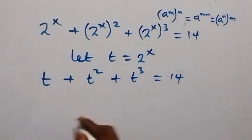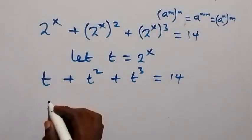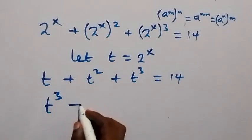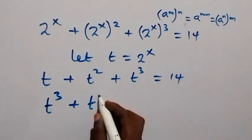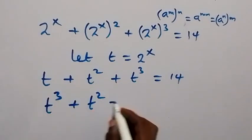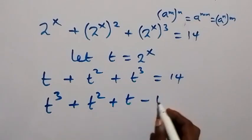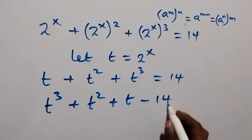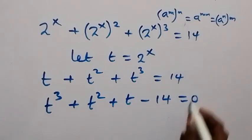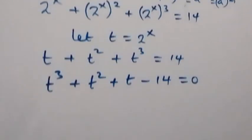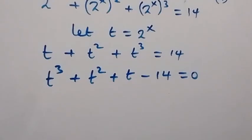The next step, we can rearrange and bring 14 to this side as well. Then this becomes t raised to power 3 plus t squared plus t minus 14 equals to 0.